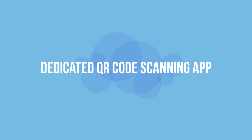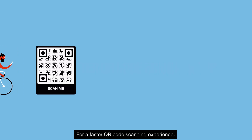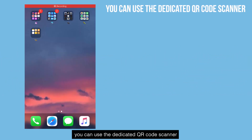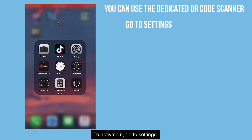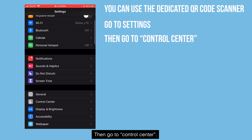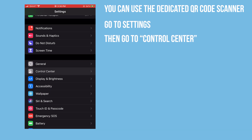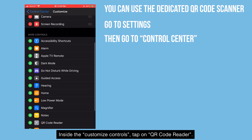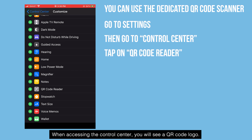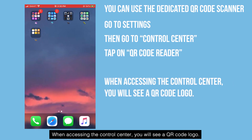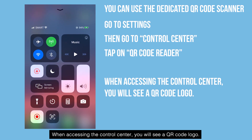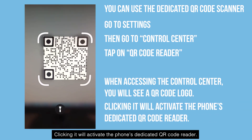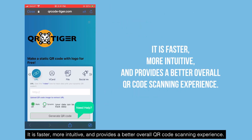Dedicated QR code scanning app: for a faster QR code scanning experience, you can use the dedicated QR code scanner. To activate it, go to Settings, then go to Control Center. Inside the customized controls, tap on QR code reader. When accessing the Control Center, you will see a QR code logo. Clicking it will activate the phone's dedicated QR code reader — it is faster, more intuitive, and provides a better overall QR code scanning experience.